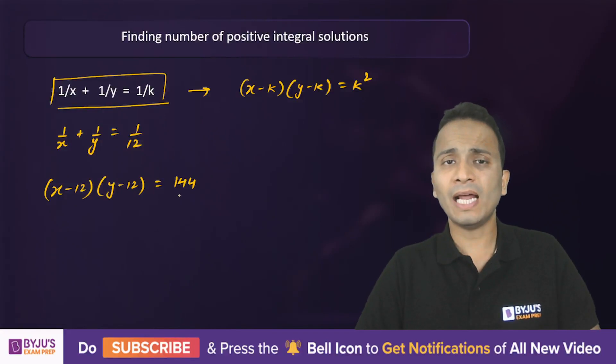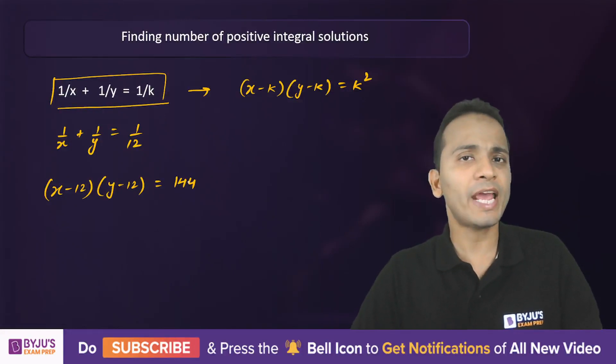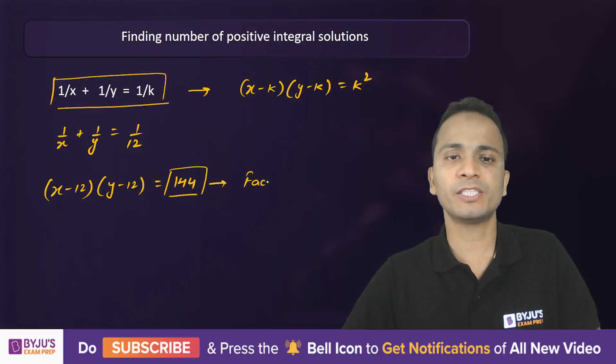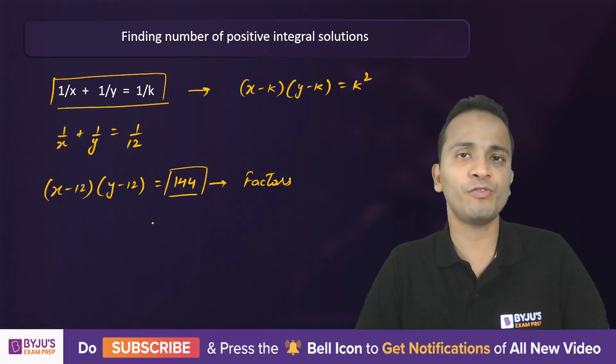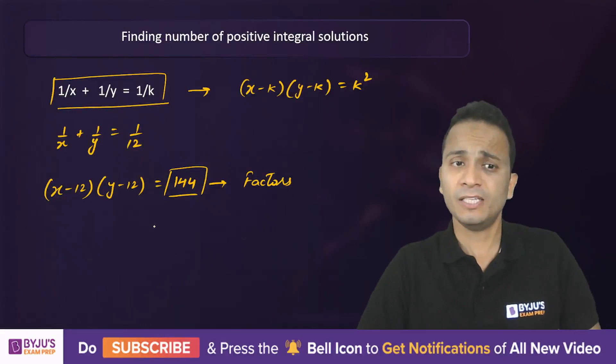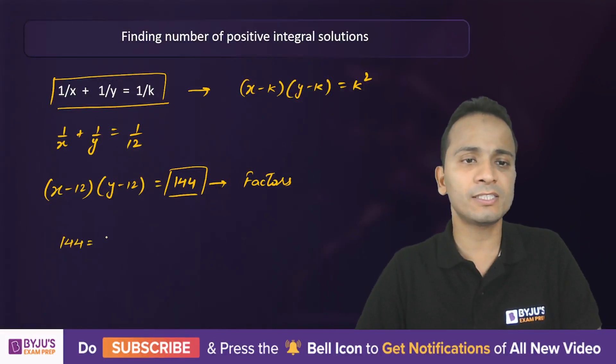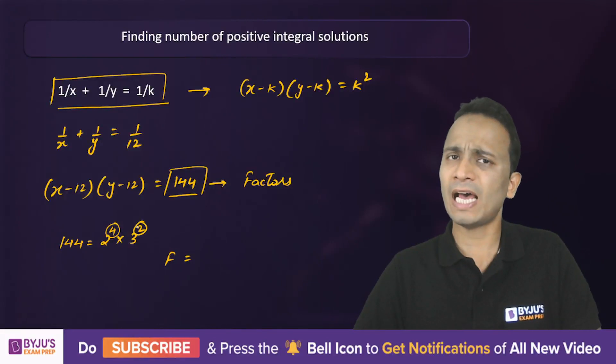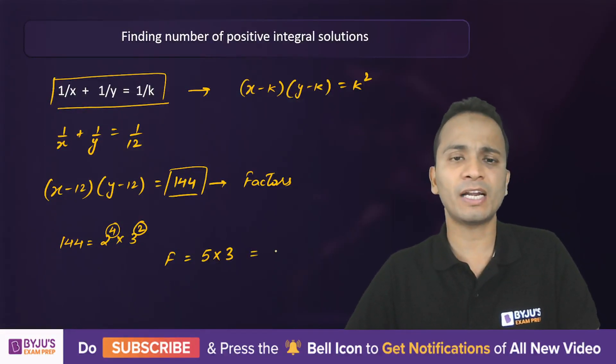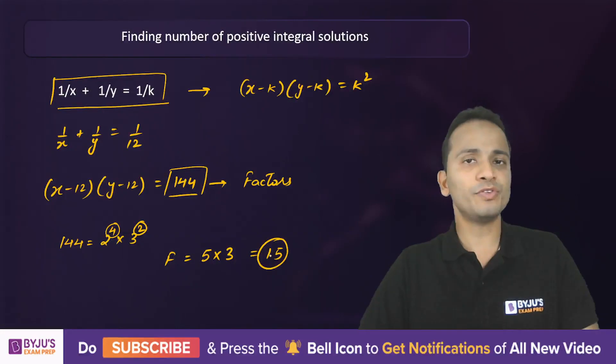The number of positive integral solutions for any equation in this form will be equal to the number of factors of this number. Now we just need to find out the number of factors of 144, and that will be our answer directly. 144 can be factorized as 2⁴ × 3². The number of factors - just consider these powers, add 1 to each power and multiply them. So 4+1 is 5 and 2+1 is 3. This is the basic way of finding the number of factors, and the answer will be 15.